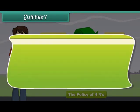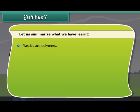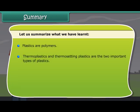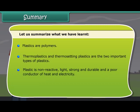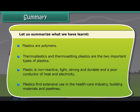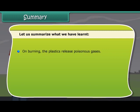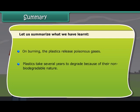Summary: Plastics are polymers. Thermoplastics and thermosetting plastics are the two important types. Thermoplastics are non-reactive, light, strong and durable, and a poor conductor of heat and electricity. Plastics find extensive use in the healthcare industry, building materials and pipelines. On burning, plastics release poisonous gases. Plastics take several years to degrade because of their non-biodegradable nature. Adopt the 4 R's: reduce, reuse, recycle and recover.